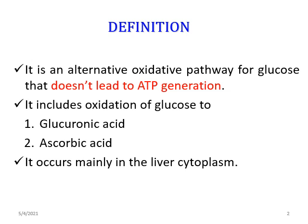The synthesis of ascorbic acid does not occur in human beings, other primates, or guinea pigs. Remember, the definition is that this is an alternative oxidation pathway of glucose for the synthesis of glucuronic acid, ascorbic acid, and pentoses like xylulose, which occurs in the liver cytoplasm. There is no ATP production in this pathway.